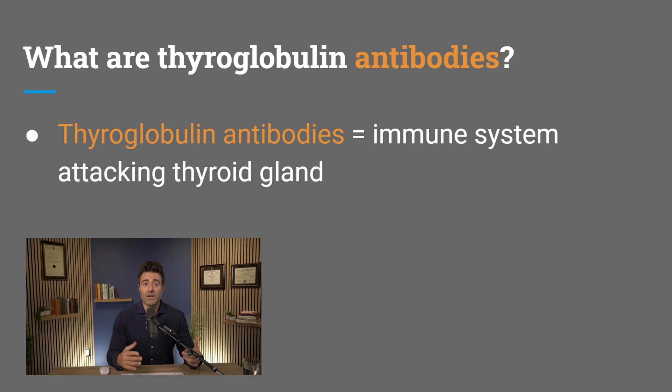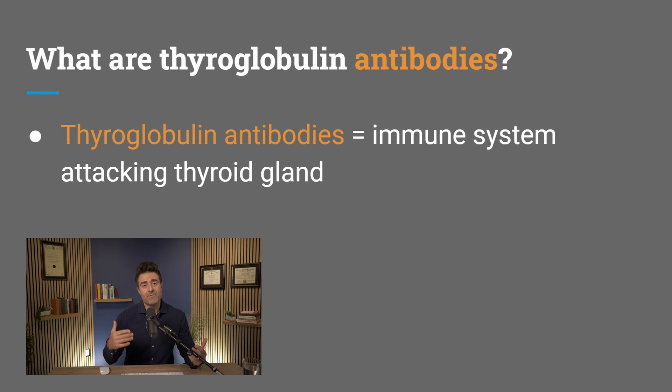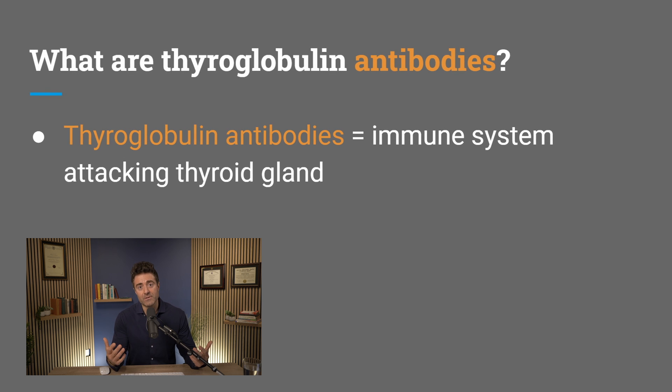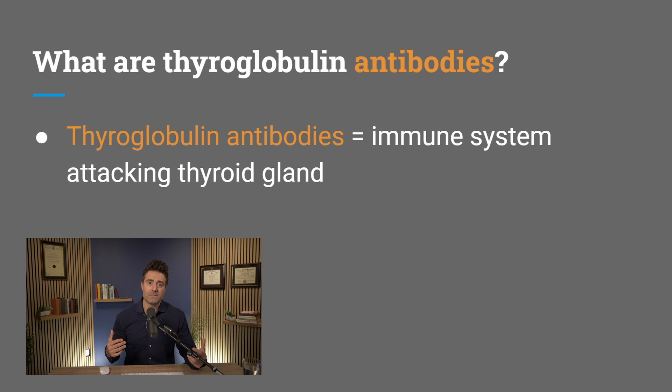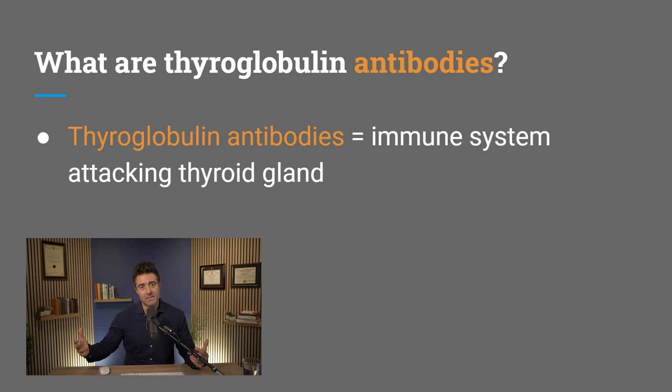So this is thyroglobulin and what it does. Probably somewhat obvious, but when you have antibodies against thyroglobulin, the immune system is attacking that tissue. This is where we can get a little bit swept into speculation or confusion. I'm excited to share what I think the appropriate way of interpreting a positive thyroglobulin antibody is, mainly in the context of thyroid autoimmunity — Hashimoto's or Graves.